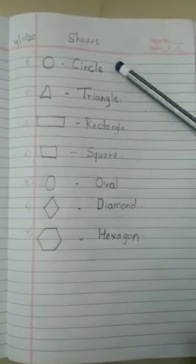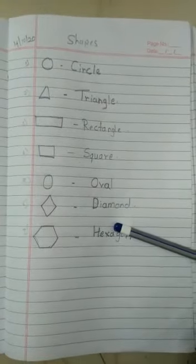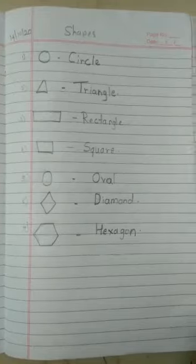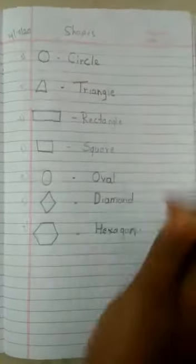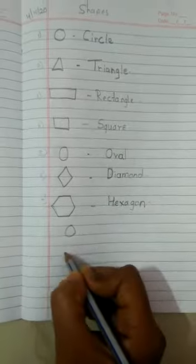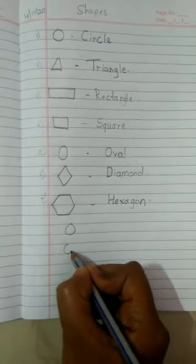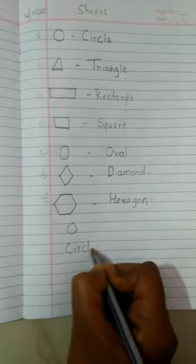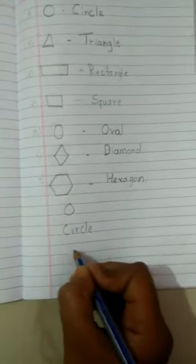So everyone, let's learn all these spellings and write each spelling three times. Like circle. Let's draw a circle and write down below the spelling C-I-R-C-L-E circle. Like this.